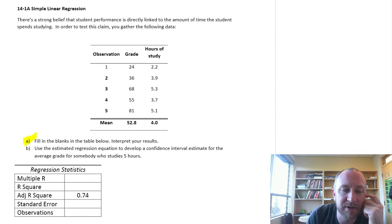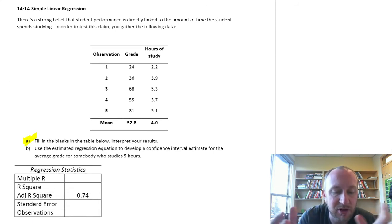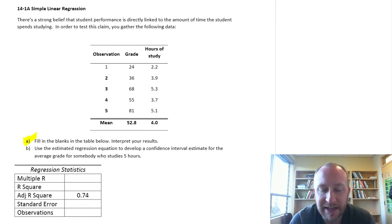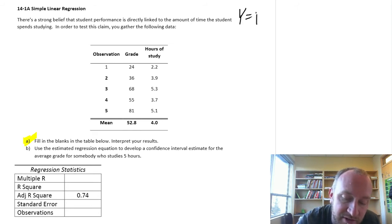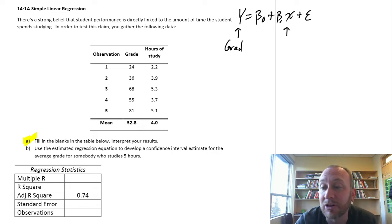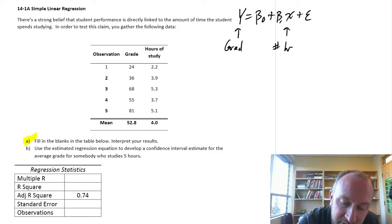So if we go back up to the problem, here we're looking at a strong belief that student performance is directly linked to the amount of time the student spends studying. So here we have some of this data available. What we have is a regression model that states that a student's grade, in this case, we're assuming a linear relationship with the number of hours of studying.